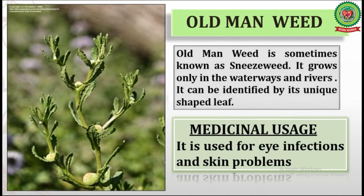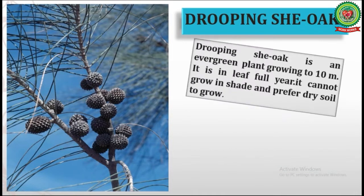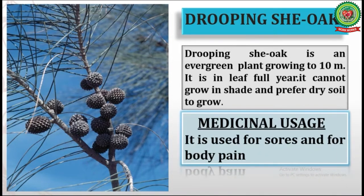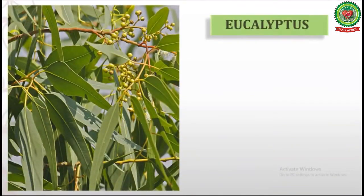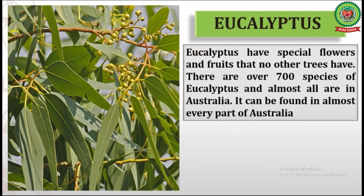Number four is Drooping She-Oak. Drooping She-Oak is an evergreen plant growing to 10 meters. It cannot grow in shade and prefers dry soil. Medicinal usage: it is used for sores and body pain. Number five is Eucalyptus. Eucalyptus has special flowers and fruits that no other trees have. There are over 700 species of eucalyptus and almost all are in Australia.